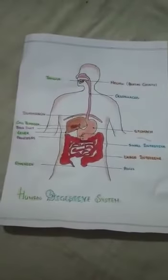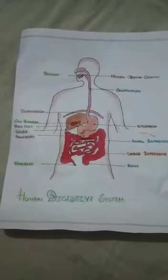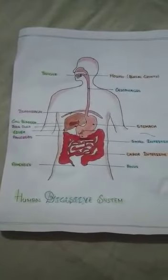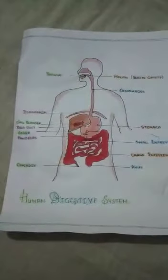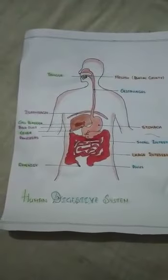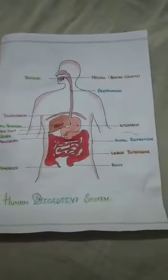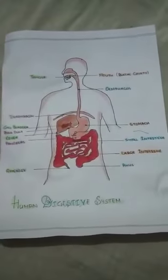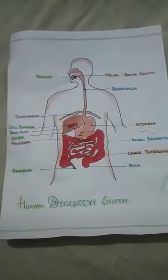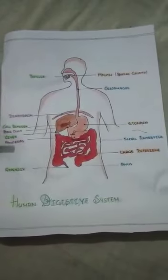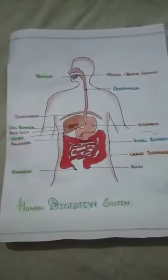The human digestive system consists of the alimentary canal and its associated glands. The various parts of the human digestive system are mouth, esophagus, stomach, small intestine and large intestine. The associated glands are liver, pancreas and salivary glands.